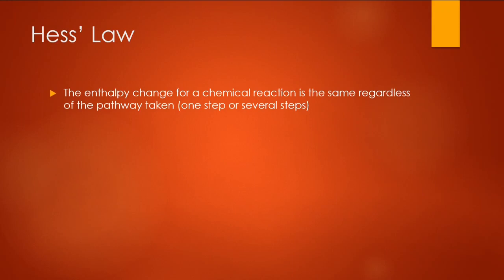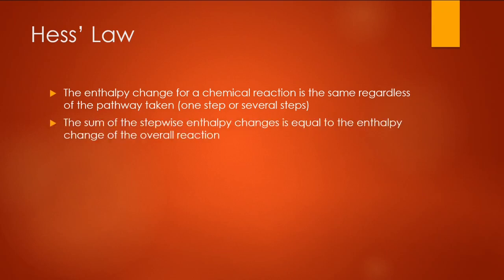Hess's Law stated looks like this: The enthalpy change for a chemical reaction is the same regardless of the pathway taken. It could be directly with one step, or through some kind of intermediate or several steps. The consequence is that whatever reactions you have to add up to get to your net equation, if you take the energies associated with those reactions and add them up, you will also get the net enthalpy change.